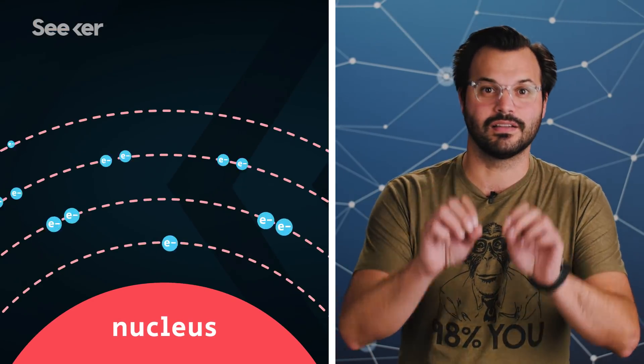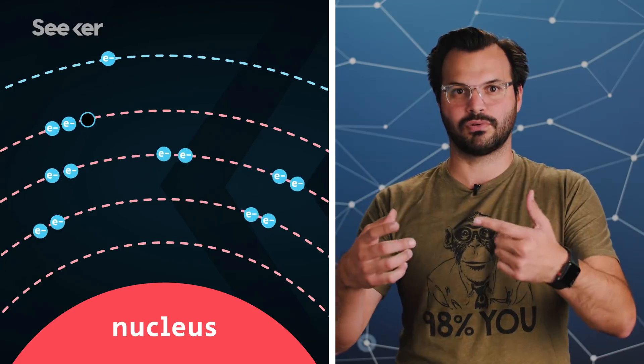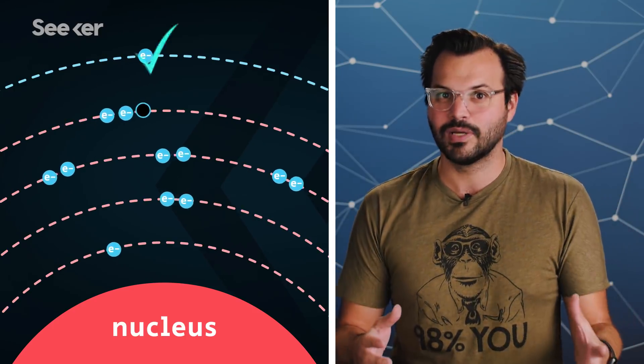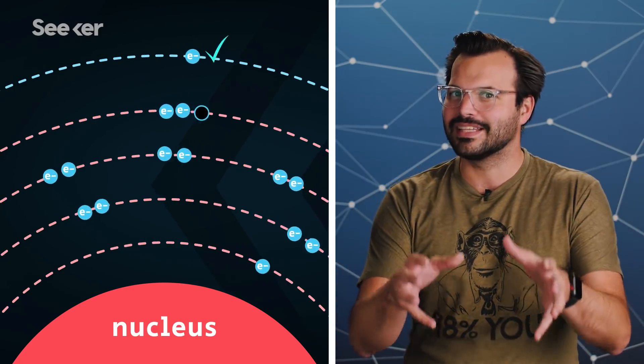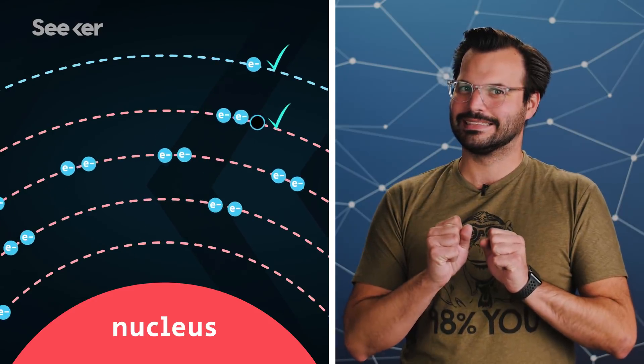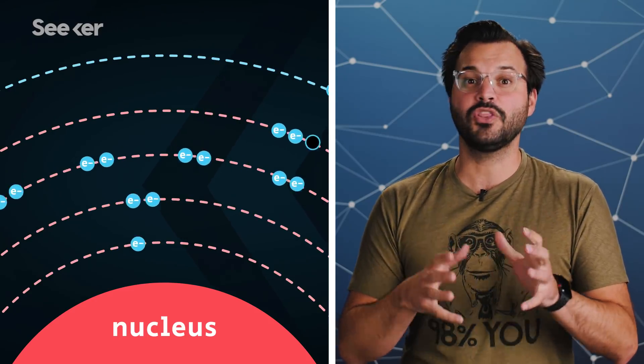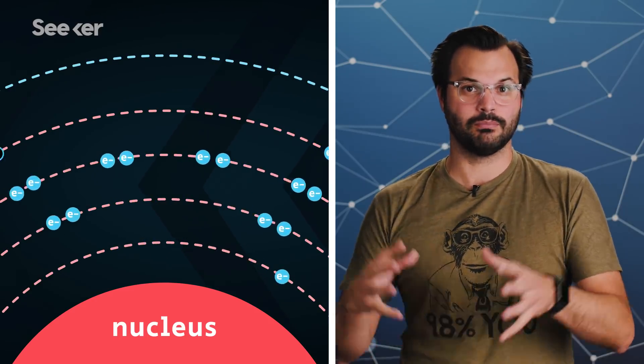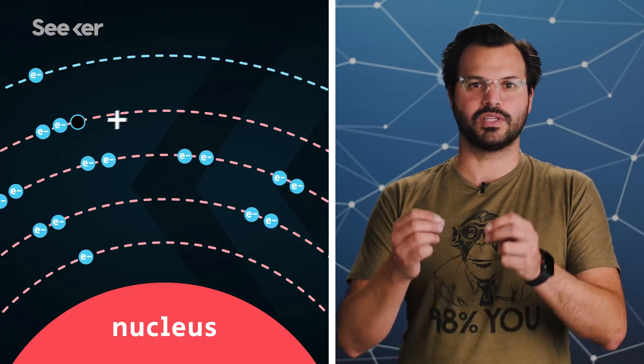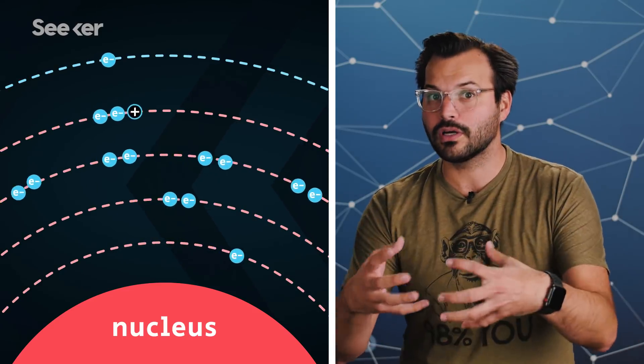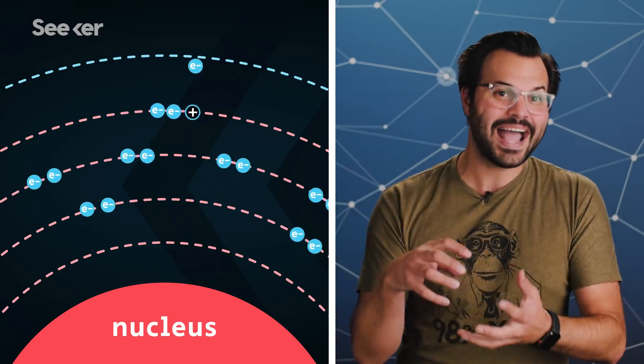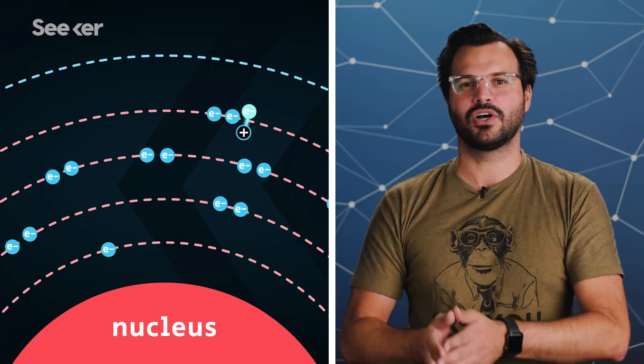They're made up of the electron that has jumped to a higher energy level from the crowded outermost shell of an atom, and the hole that the electron left behind. Yeah. The other electrons in that crowded shell make that hole behave as if it were a particle with a positive charge, and the hole attracts the escaped electron back like it's coaxing a runaway dog home with a treat.